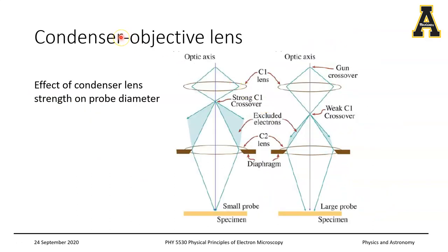Similar to the SEM, you have a condenser-objective lens combination that determines the spot size and probe size. As we have seen for SEMs, the condenser lens strength plays a very important role in the probe diameter. You can see here a strong condenser lens versus a weak condenser lens — the excluded electrons and the solid angles and cones that are generated are different, and that determines the final probe diameter.